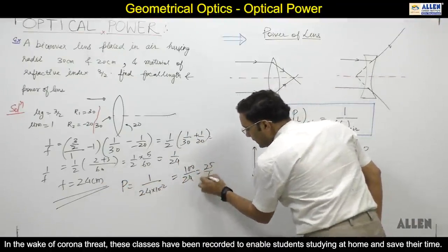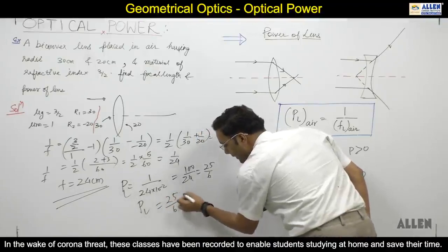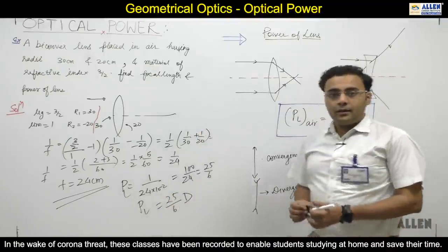25 by 6. Power of the lens is 25 by 6 diopter. Clear? Okay.